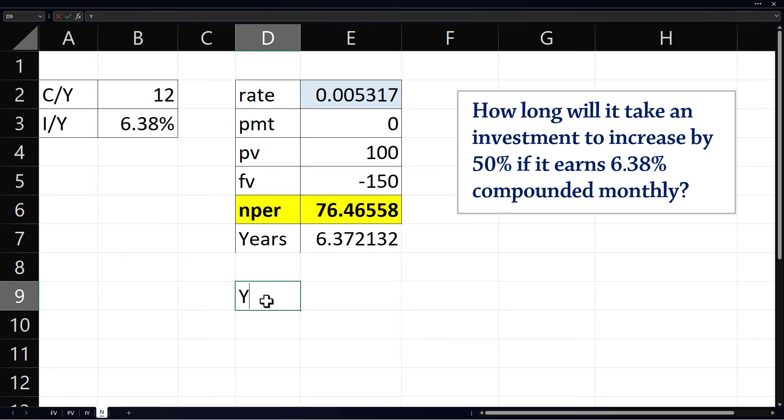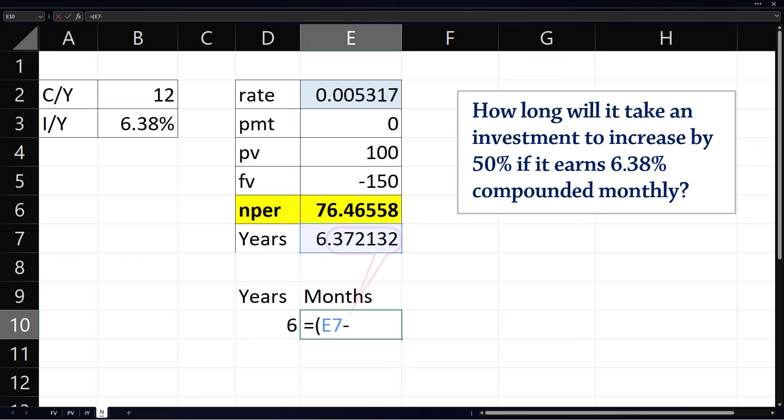Now suppose we want it in years and months. The whole number of years is 6 here. For months, we take the decimal part of the years and multiply it by 12. If we want it in years and days, we multiply the decimal part by 365. And that's it.